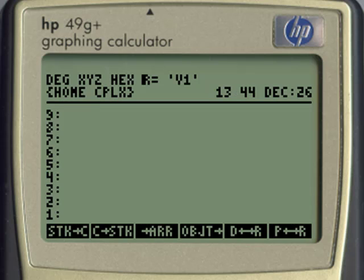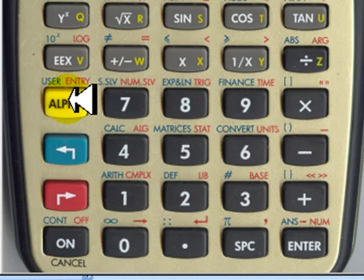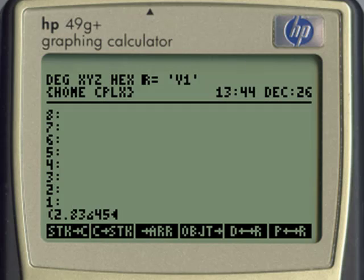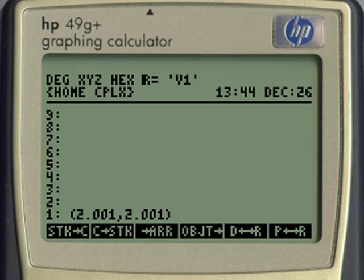In the calculator, we would go, round parenthesis, 2.83, angle sign, alpha, red, 6, 45 degrees. I make sure I'm in degrees. By the way, the calculator is in rectangular mode. As soon as I type enter, it will take the number and show it in its rectangular form, but the number will continue to be what it is. See? Enter.